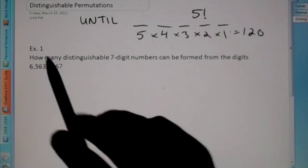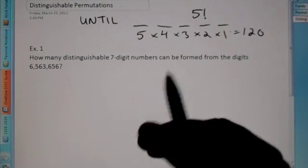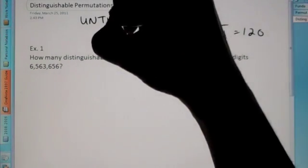That's just the standard permutation. Now, there is a thing called distinguishable permutations. The question is, what do we do with distinguishable permutations? What happens when you have the same letter twice?